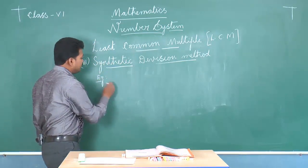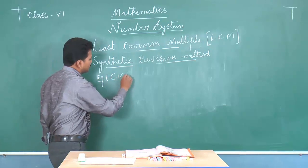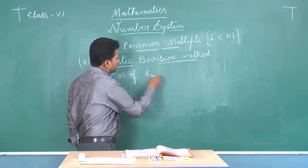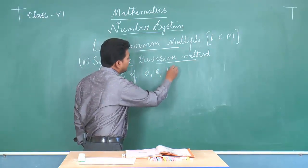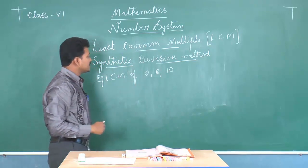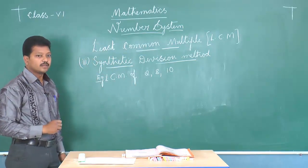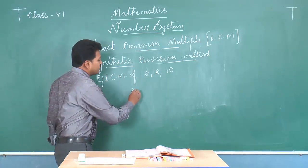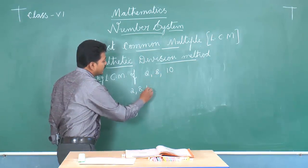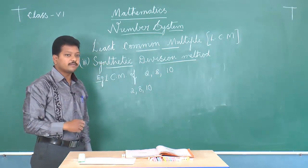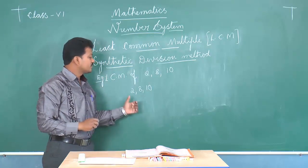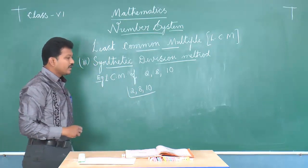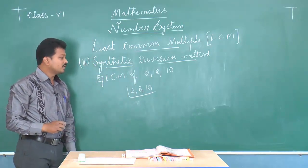The example is: find the LCM of 2, 8, and 10. To find the LCM, first we write the given numbers in a row — that is 2, 8, and 10 — separated by commas. We have three different numbers here. Then we draw a line and look for a common factor of all three numbers.